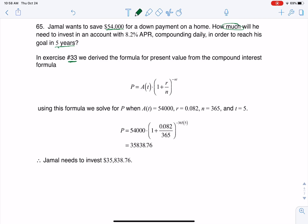Now, we go back to exercise 33. We solved for the principal equation, so we can just plug in our numbers. We know the amount that he's going to need in five years is $54,000. We know the interest rate as a decimal is 0.082. If it's compounding daily, we know that we get interest 365 days a year, and it says in there that we need five years.